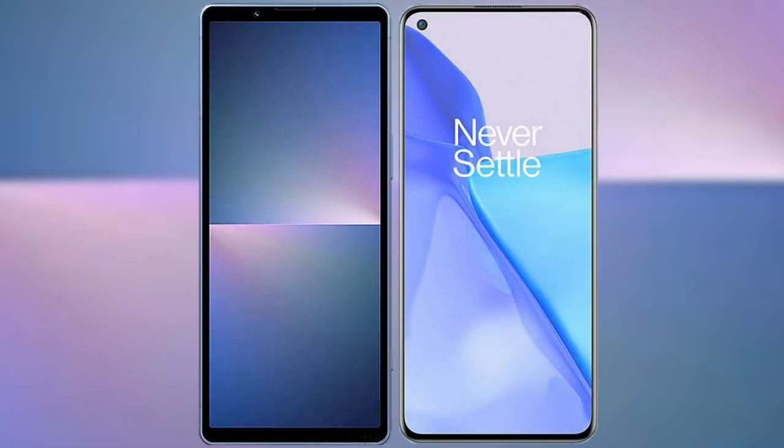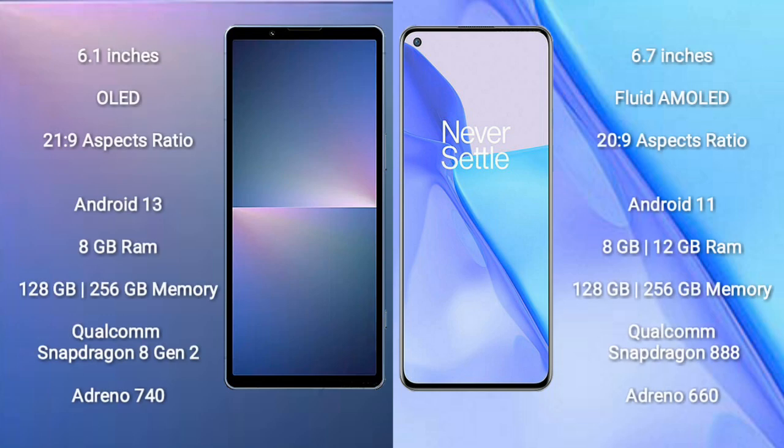I will compare the new Sony Xperia 5 Mark 5 with OnePlus 9. Sony Xperia 5 Mark 5 comes with a 6.1-inch OLED display and aspect ratio 21:9. OnePlus 9 comes with a 6.55-inch flat AMOLED display and aspect ratio 20:9.